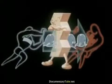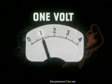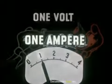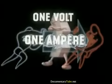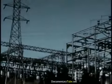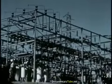Its value is best understood when its relation to the other factors is explained. A pressure of one volt produces a current of one ampere through a resistance of one ohm. Whatever the source or the magnitude of electric energy, these factors always have the same relation to each other.